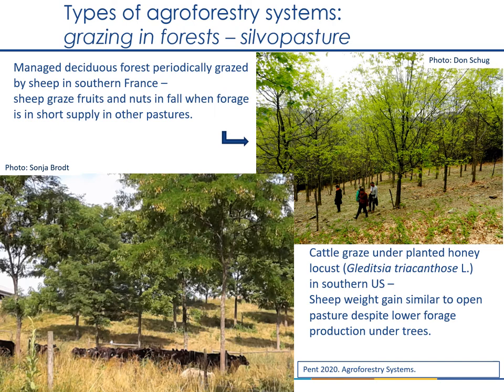Silvopasture is grazing in forests, either natural forests or plantations. Here we see a natural deciduous forest area in southern France where sheep are brought to graze on fruits and nuts in the fall when forage is in short supply in other pasture areas. Below we see cattle grazing under a plantation of honey locust trees in the southeastern United States. Studies have shown that despite forage production being reduced under the trees compared to open pasture areas, sheep weight gain is similar due in large part to improved animal welfare when cool shade is available. In addition, the honey locust trees produce protein-rich pods that sheep can eat.